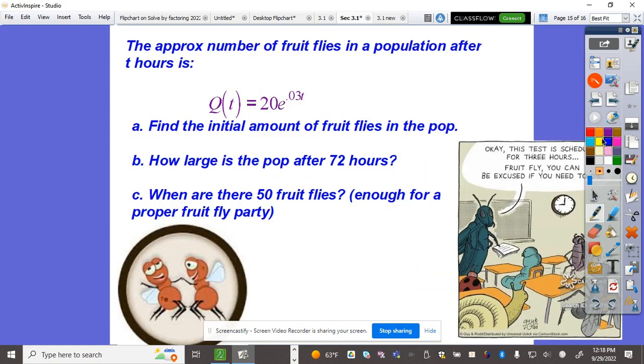The approximate number of fruit flies in a population after T hours is Q(T) = 20e^(0.3T). Find the initial amount, how large is the population after 72 hours, and when are there 50 fruit flies. The initial amount is A₀, which is 20 flies.